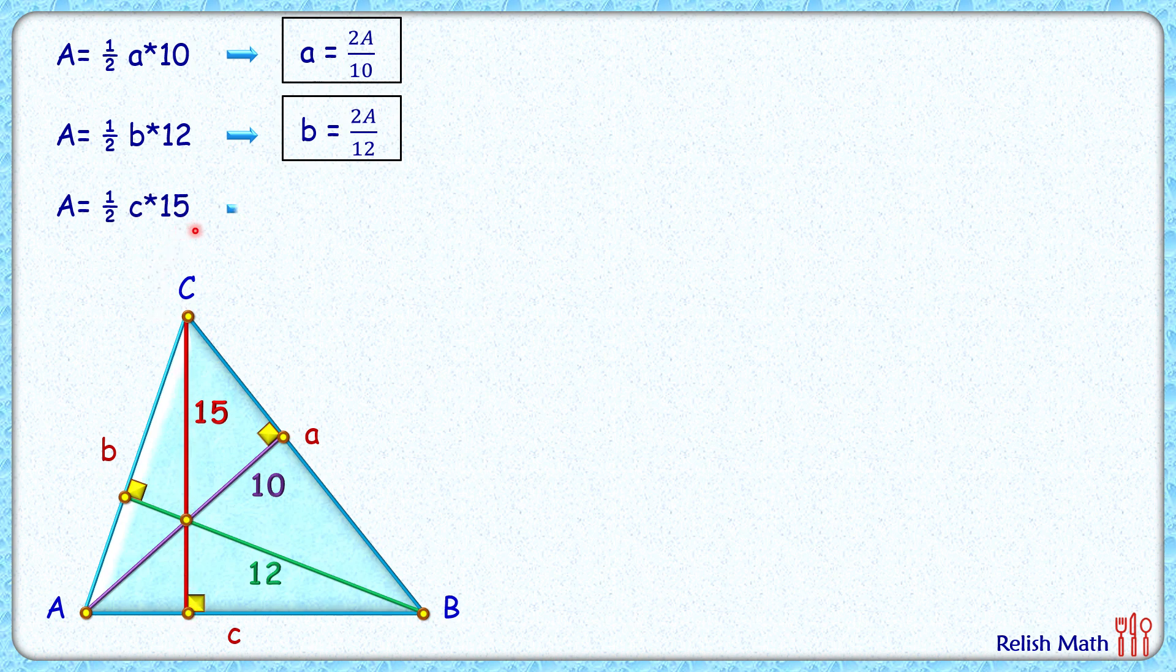Simplifying, we'll get c as 2A divided by 15. We know that area of a triangle can also be found using Heron's formula: area equals square root of s times (s-a) times (s-b) times (s-c), where s is the semi-perimeter.